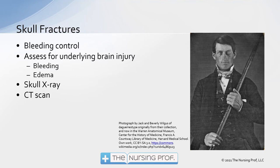He carried that piece of metal with him everywhere he went — it was kind of his lucky piece of metal, because it didn't kill him. With skull fractures, we want to first make sure we're controlling the bleeding, because the skull is a very vascular area. We assess for underlying brain injury, including bleeding and edema that could be causing pressure on the brain. A skull x-ray is one way to assess for skull fractures, but the CT scan is really much more useful because we also get to see the brain and the underlying structures.